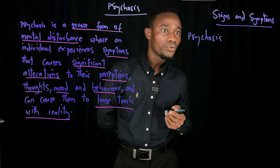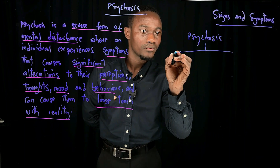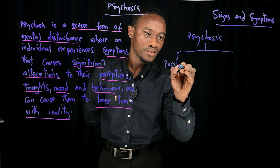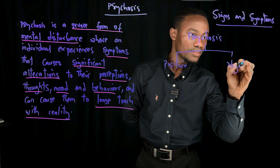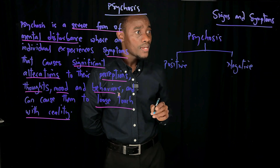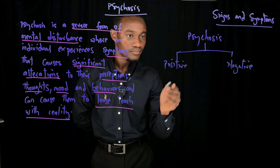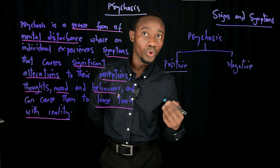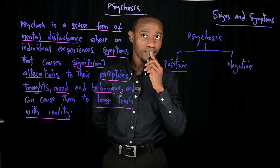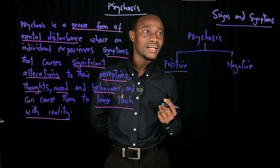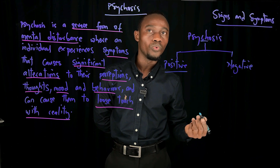The signs and symptoms of psychosis can be broadly categorized into two domains. We have the positive signs of psychosis and we have the negative signs of psychosis. The positive signs of psychosis are those signs and symptoms that a person develops after they get psychosis — those symptoms that are present in individuals with psychosis but are absent in people who are not having psychosis.